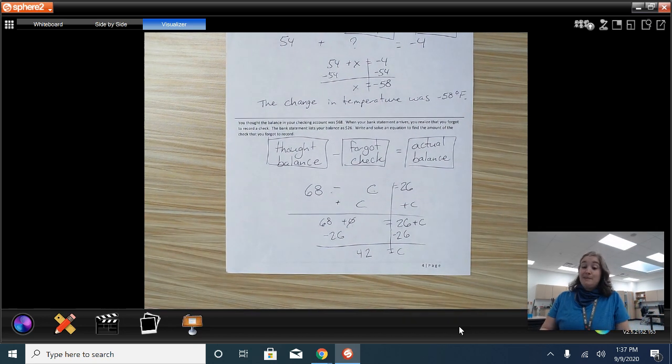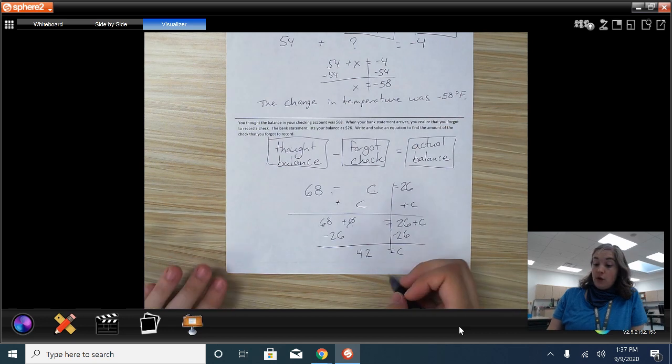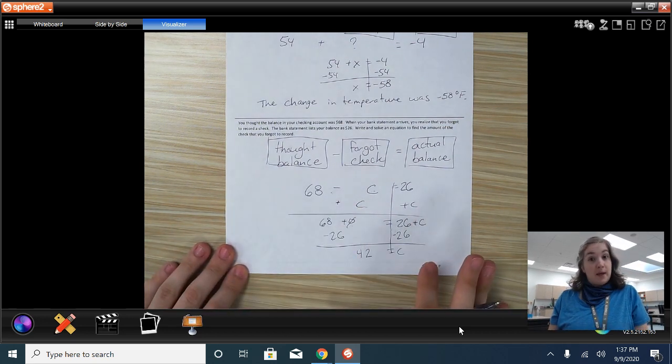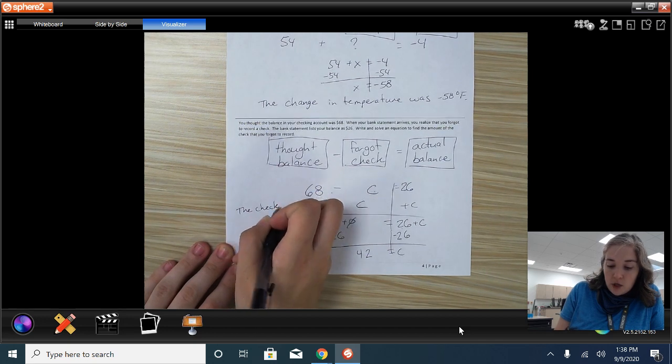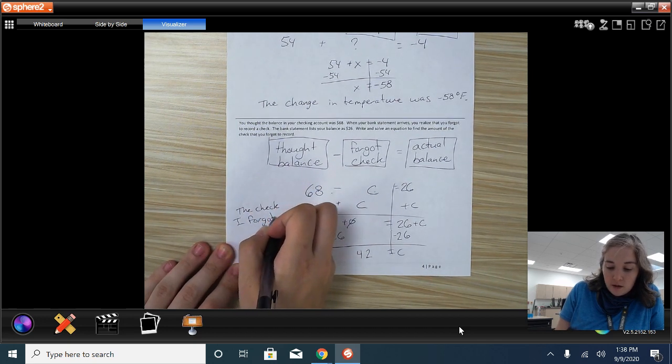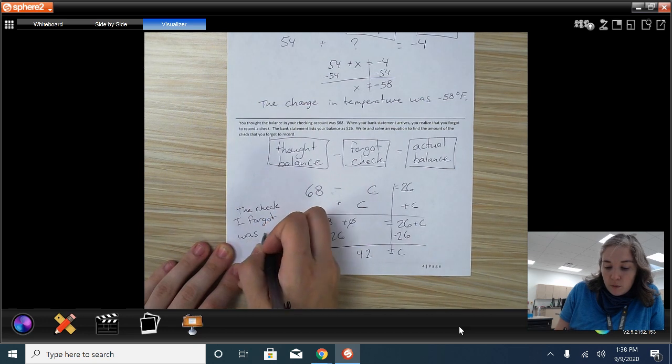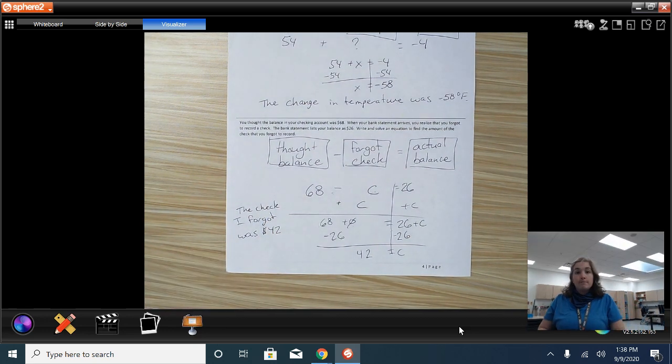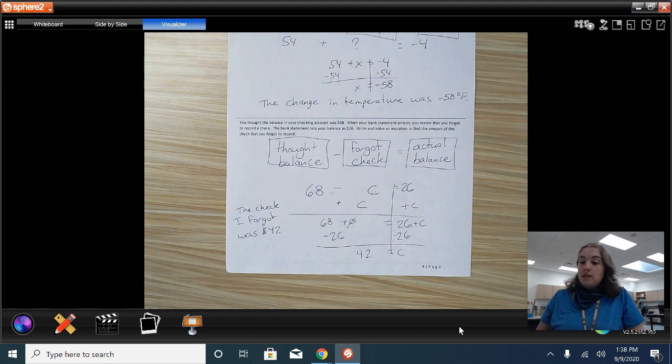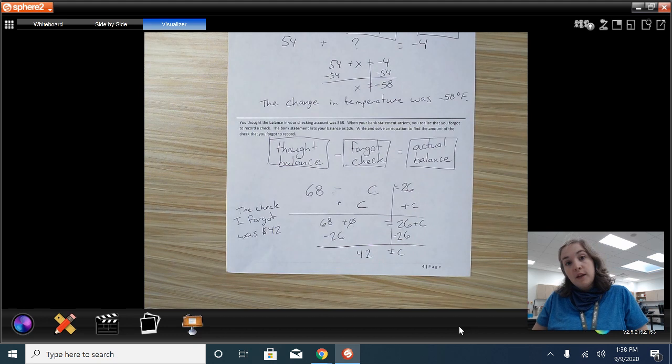So to finish off my answer, I would say the check I forgot was $42. There we go. We're going to get to the other half of lesson one when we look at multiplying and dividing in the next video.